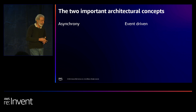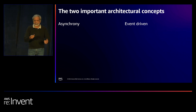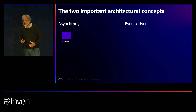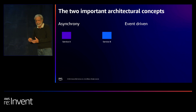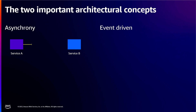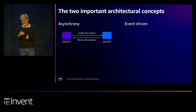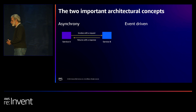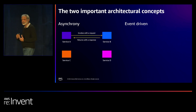To understand asynchrony, you need to understand synchronous. Most of you must be familiar with this simple pattern: an application requesting a service — say, get me the price of a product — and then it gives back the price. You, as a customer with the app, are happy. It's a synchronous flow.